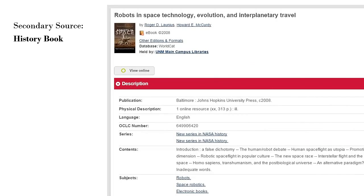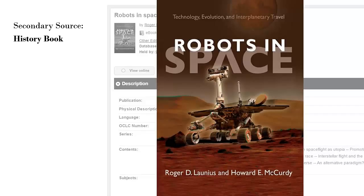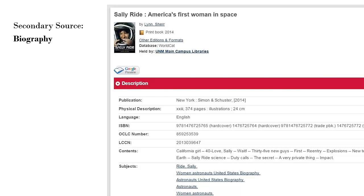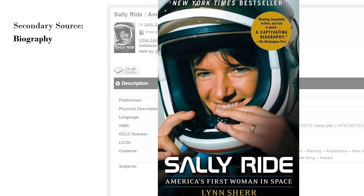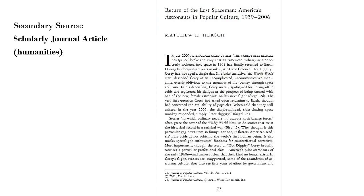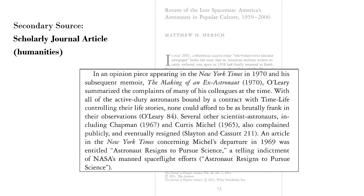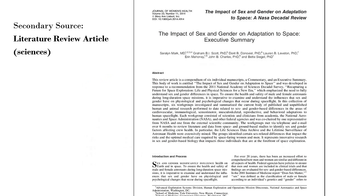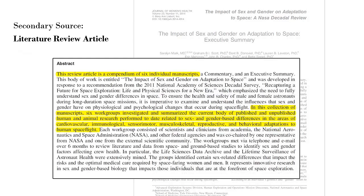Here are some examples of secondary sources. This journal article within the Journal of Popular Culture relies on numerous primary and secondary sources in order to help readers consider the subject in new ways. Notice how many primary and secondary sources the author compiled in order to construct a new narrative. This review article in the sciences would be considered a secondary source as well, due to the fact that it is a compilation of multiple studies rather than a new experiment of its own.